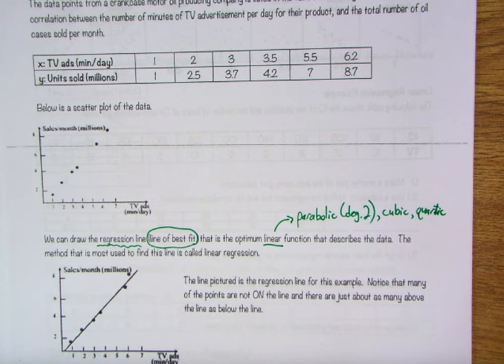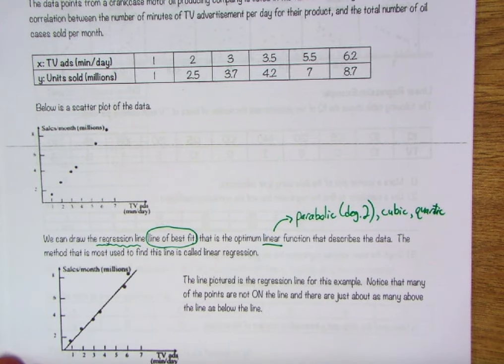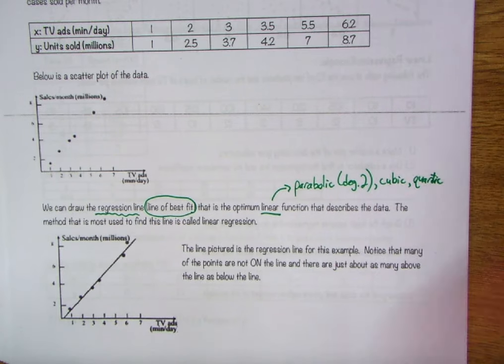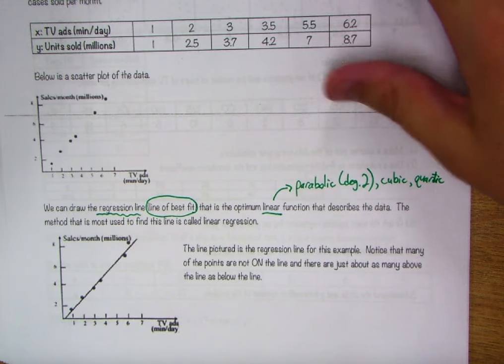And right now, of course, in unit 1, we're still dealing with lines and lines of best fit. So let's try to just set this up using our calculator and a line of best fit.